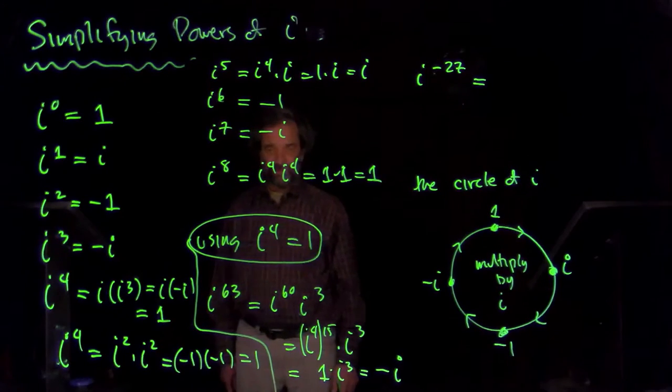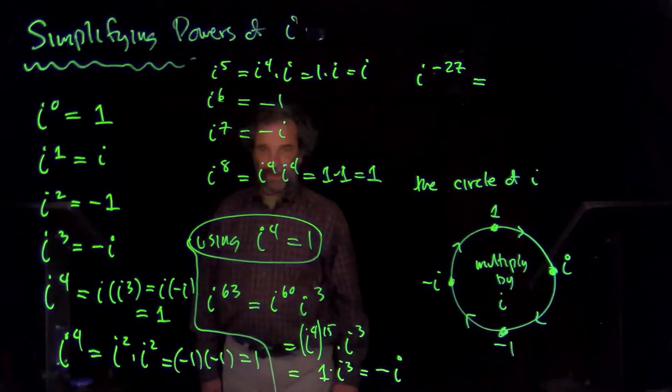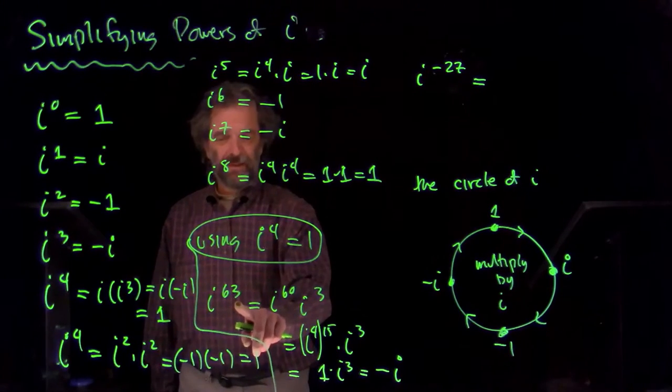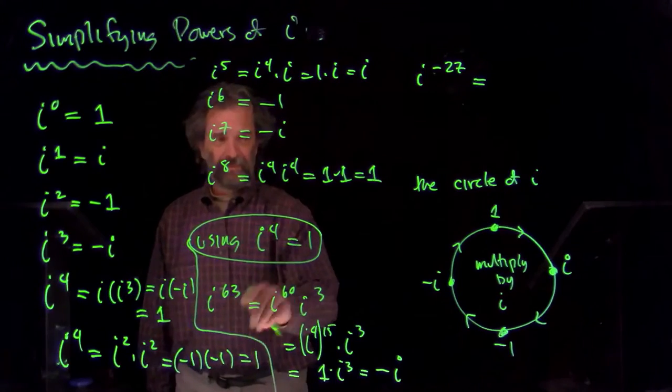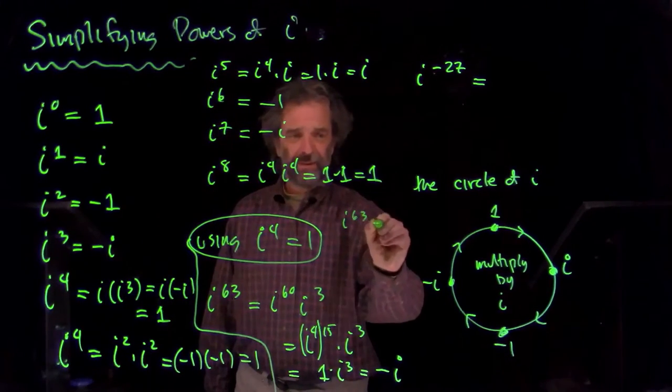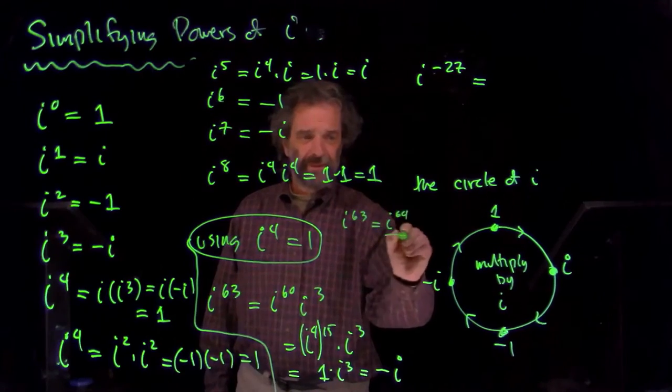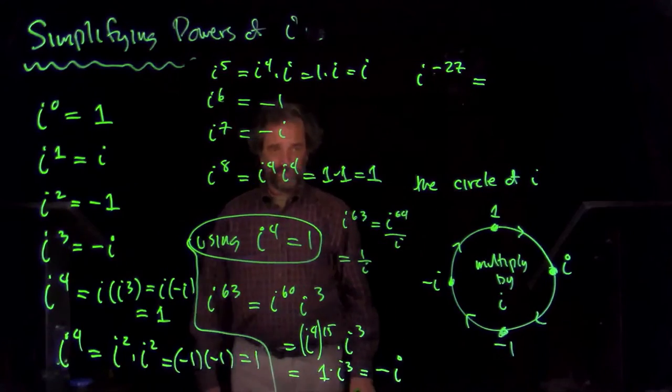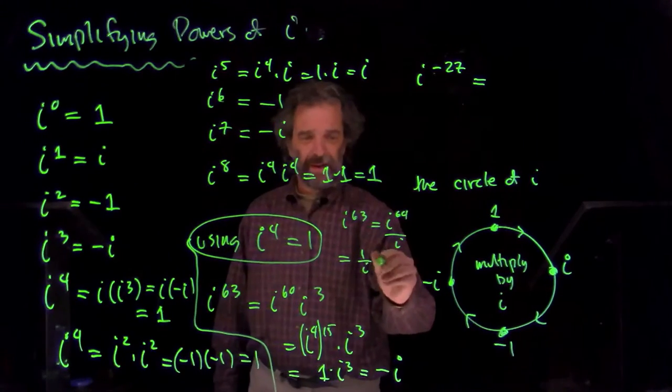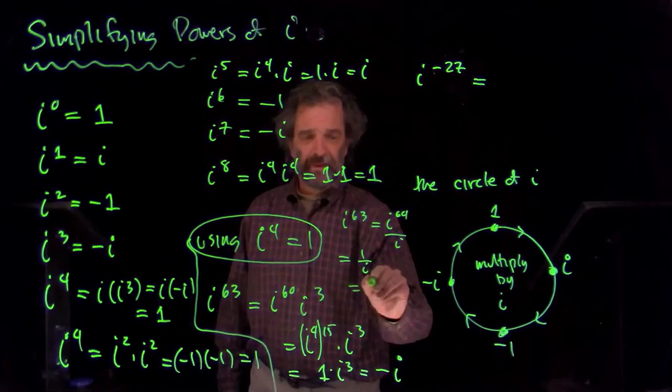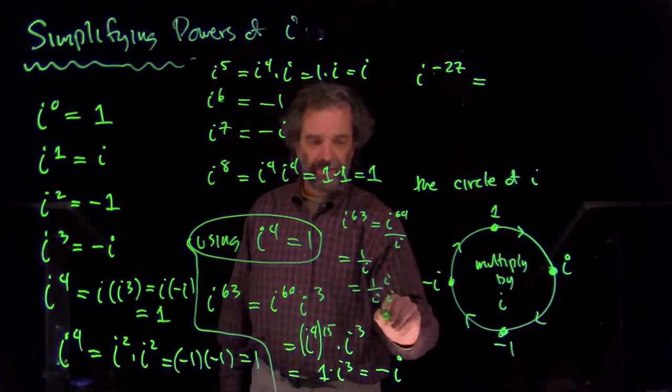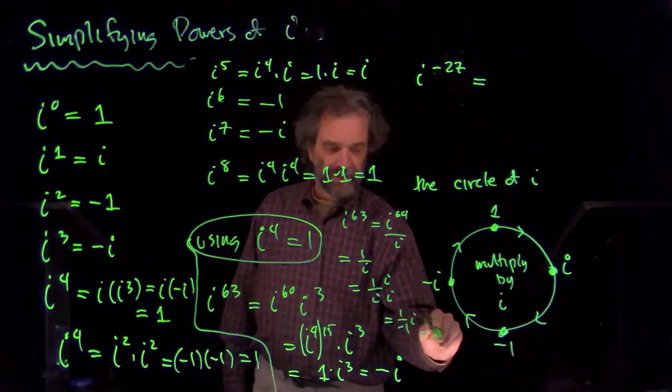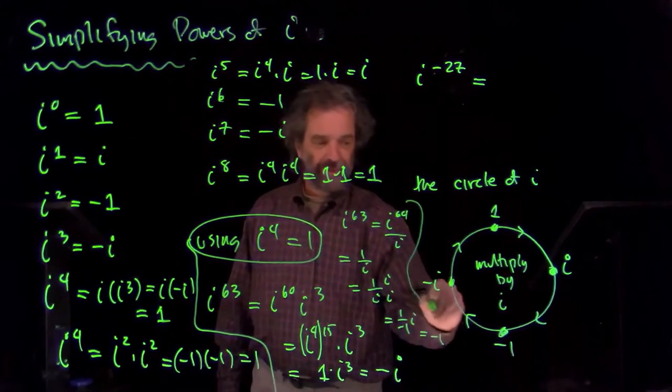So, there's other ways to do that. I know that sixty-four is a multiple of four. So, i to the sixty-fourth is one. So, I could write that i to the sixty-third is i to the sixty-fourth over i, which is one over i. I'm going to have to simplify that by multiplying top and bottom by i. One over i times i over i. You get one over minus one i. Eventually, you get minus i. That took a lot of work.